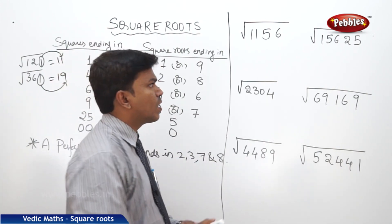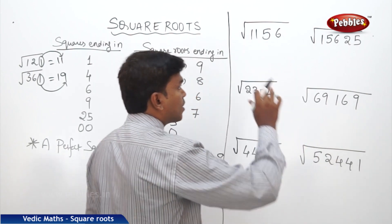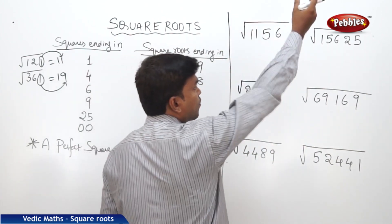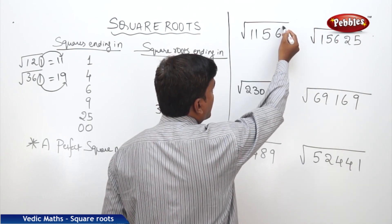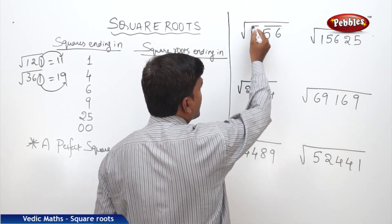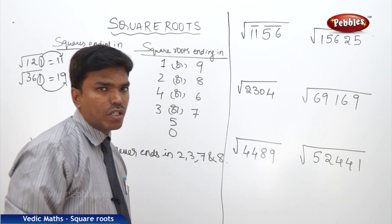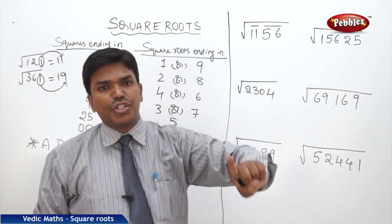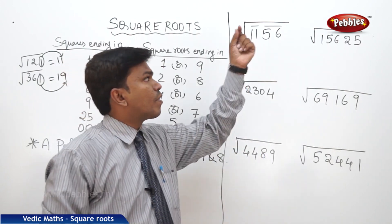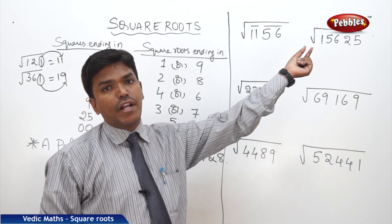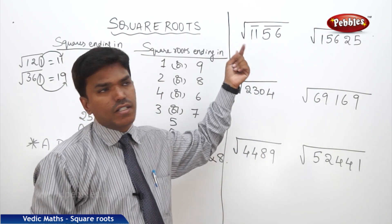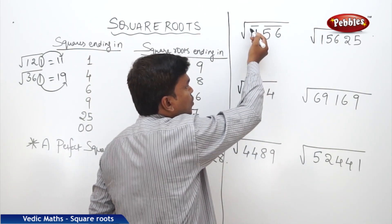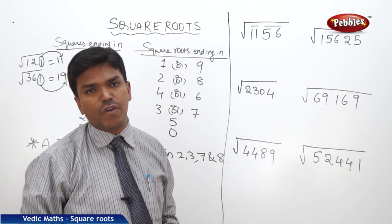Now clearly observe. What is the first step of finding the square root of a number? From the right side, you need to make the number partition into groups of 2 digits. For a 4-digit number, from the right side first take 2 digits, then go for the next 2 digits. That is the first step of finding a square root.